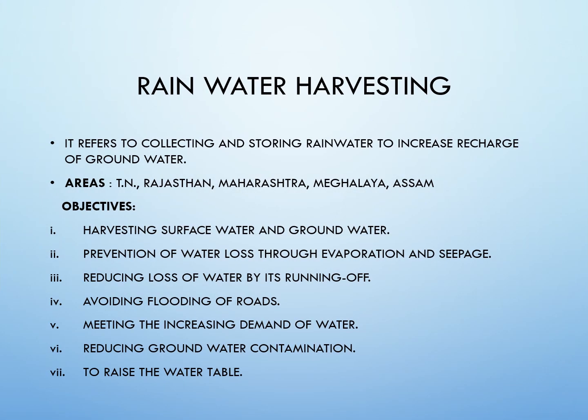Rainwater harvesting is an activity of collecting rain water directly or recharging it into the ground to improve groundwater storage in aquifers. In this method, the rain water is collected on the rooftop and is directed to dry tanks. The areas or states which are mostly practicing this rainwater harvesting technique are Tamil Nadu, Rajasthan, Maharashtra, Meghalaya, Assam, etc.